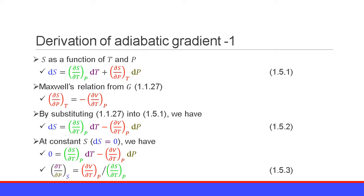Let us derive the adiabatic gradient. First, let us consider the entropy S as a function of temperature T and pressure P. Therefore, the total derivative of the entropy S equals the partial derivative of S with respect to the pressure P at constant temperature T, times dP. Equation 1.5.1.